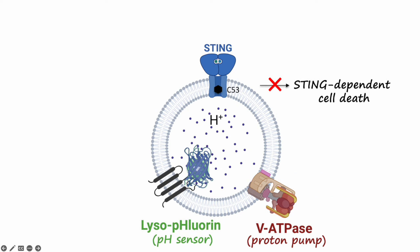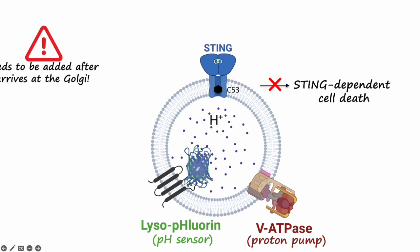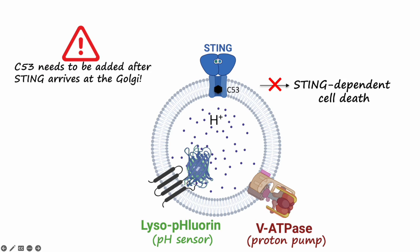Remarkably, C53 also fully blocks STING-dependent cell death. It is important to note that C53 can disrupt STING trafficking if added early on. To selectively block the STING channel without affecting its trafficking, C53 should be added after STING arrives at the Golgi or post-Golgi vesicles.